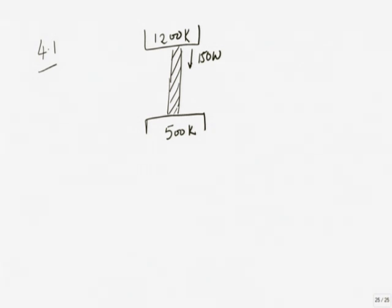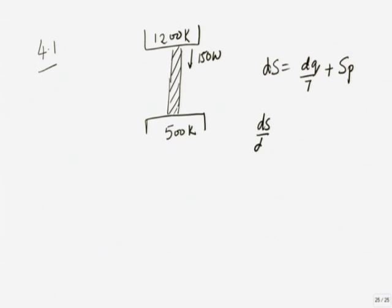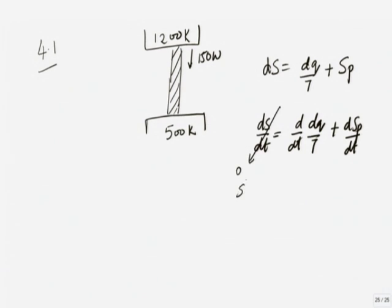This is the conductor in steady state. For the conductor, dS/dt equals the sum of dQ/T terms plus dS_p/dt. Since it is in steady state, the conductor's entropy is not changing — dS/dt equals 0. So 0 equals the Q-dot/T terms plus dS_p/dt. The temperature at the hot end is 1200 K and at the cold end is 500 K.